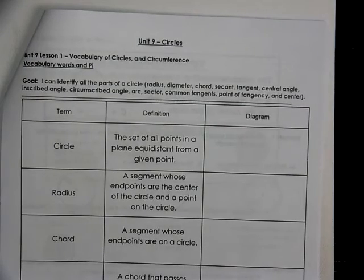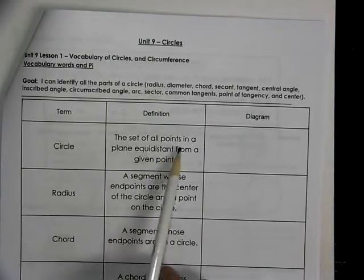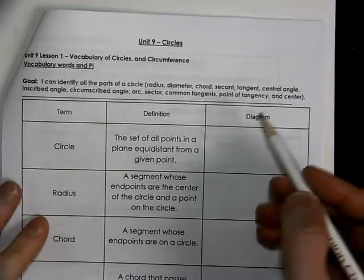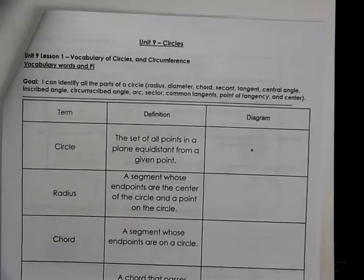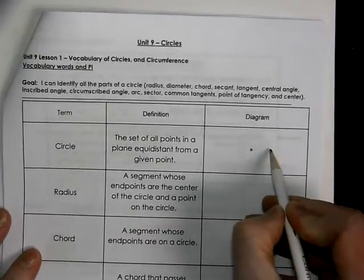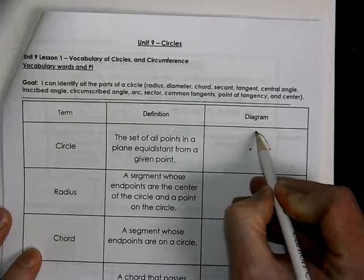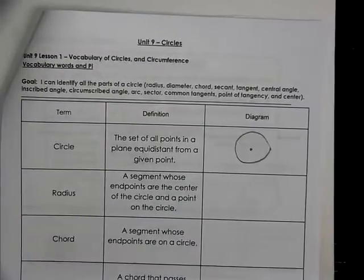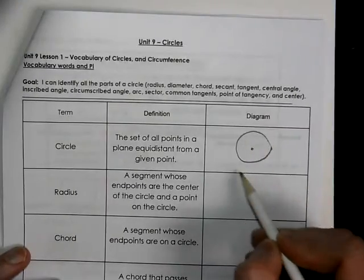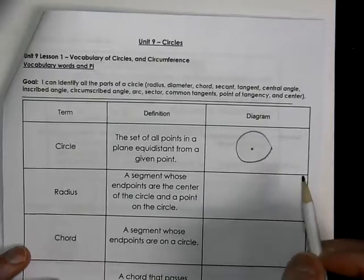This is Geometry, Unit 9, working on circles. A circle is a set of all points in a plane equal distance from a given point. We have this center point, and all the points that are equal distance from it — that's looking like a circle. All the points equal distance from a center would make a circle.